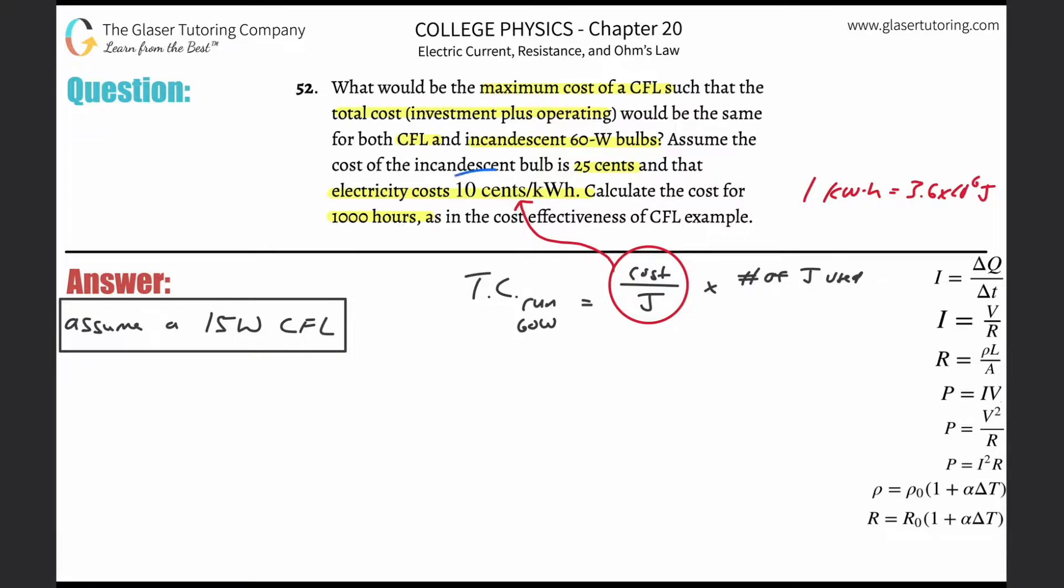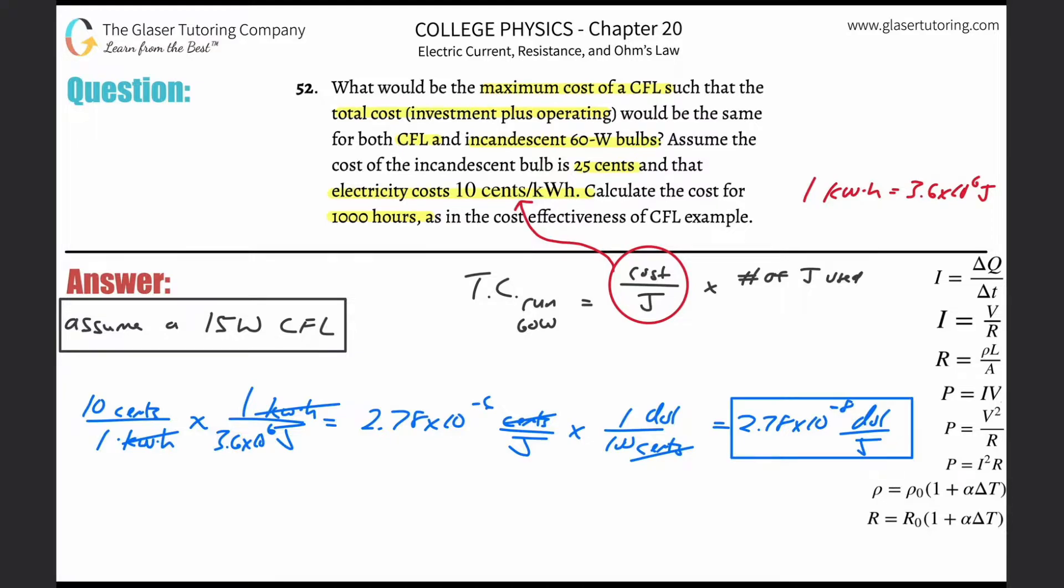I don't like to work with kilowatt hours. I like to work with joules. So I remember a simple conversion that one kilowatt hour is equivalent to 3.6 times 10 to the sixth joules. So the first thing I'm going to do is take this 10 cents per kilowatt hour and convert that into cents per joule. So 10 cents per one kilowatt hour, kilowatt hour on the top, joule on the bottom, for every one kilowatt hour, it's 3.6 times 10 to the sixth joules. Take 10 divided by 3.6 times 10 to the sixth. This works out to be 2.78 times 10 to the minus six cents per joule.